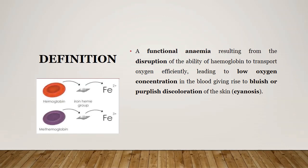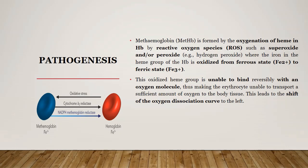Methemoglobinemia is basically a functional anemia which results from the disruption of the ability of hemoglobin to transport oxygen efficiently, leading to a low oxygen concentration in the blood, giving rise to a purplish or bluish discoloration of the skin — cyanosis. The genesis of methemoglobinemia is due to the oxidation of the heme in hemoglobin by reactive oxygen species such as superoxide or peroxide ions, where the iron in the heme group is oxidized from the ferrous to the ferric state. This oxidized heme group is unable to bind reversibly with oxygen, rendering the RBCs incapable of transporting oxygen efficiently to the body tissues, leading to a shift in the oxygen dissociation curve.